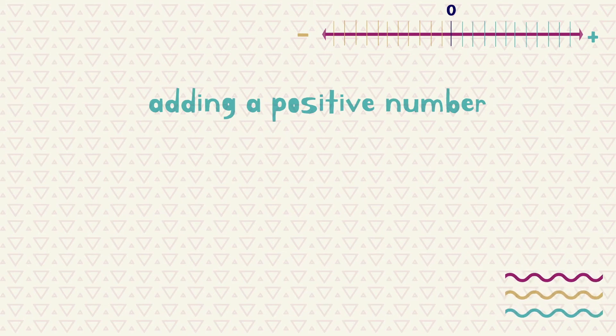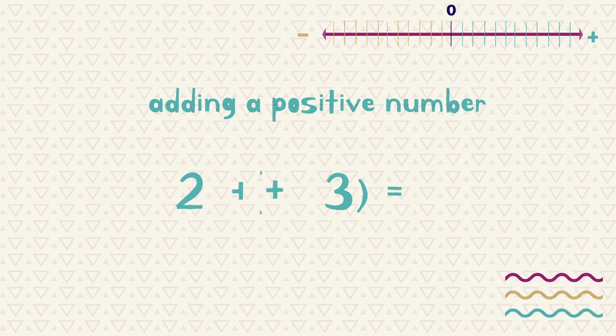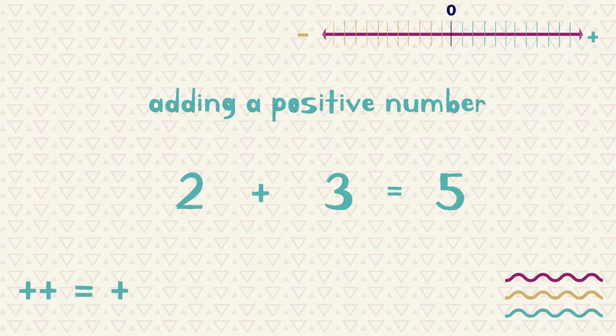Let's start with adding a positive number. In this example, we are adding a positive 3 to the number 2. Sometimes the number may or may not be shown with brackets. As we are adding a positive number, we are essentially just adding. So the rule is that when we have two plus signs together, we can just change this to a single addition sign.